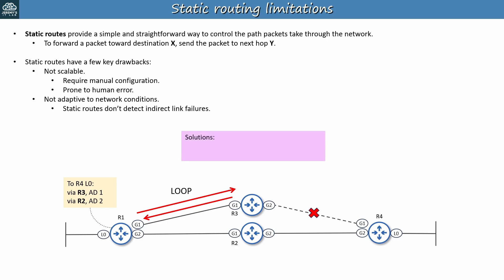Now there are a couple of solutions to this issue. The first is IP SLA, Service Level Agreement, which is a topic on the NCORE exam that we'll cover later in the course. Basically it lets R1 track whether the route's destination is actually reachable, and remove the route if the destination becomes unreachable. The second solution is to use dynamic routing protocols instead of static routing — that's the solution we'll focus on for now.